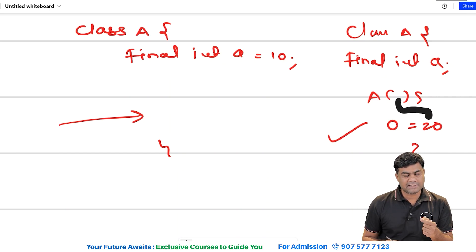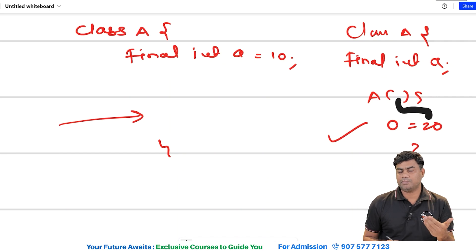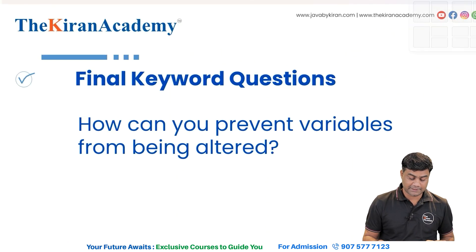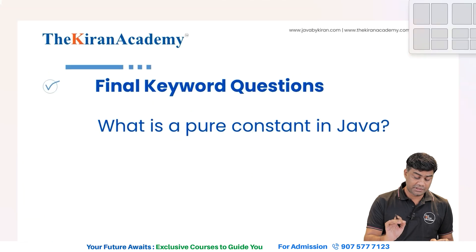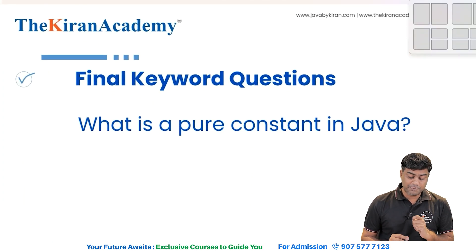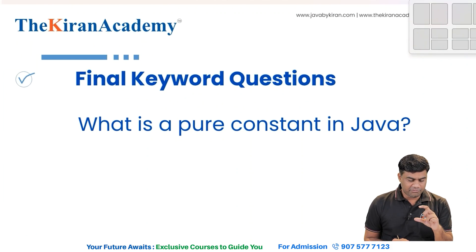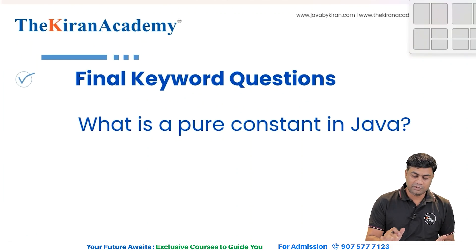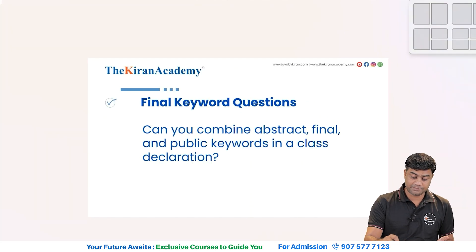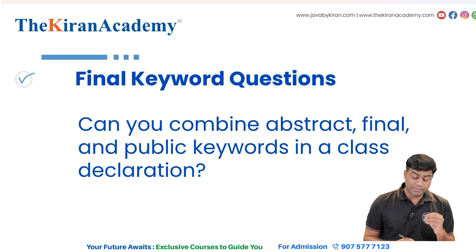Next question: What is a pure constant in Java? A pure constant means a variable that is both final and static — one copy in storage, and nobody will be changing the value. So `final static` together defines a pure constant.